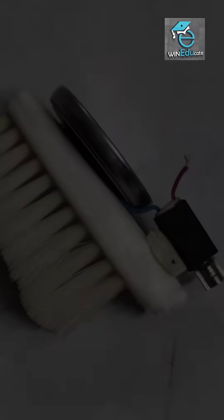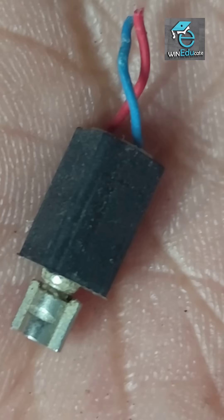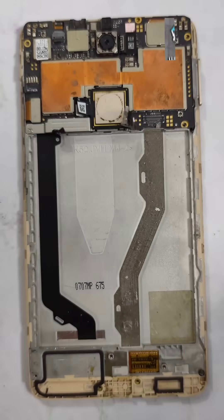Materials needed: toothbrush head cut from an old toothbrush, small vibrating motor like from a phone or electric toothbrush, button cell battery, tape or glue.